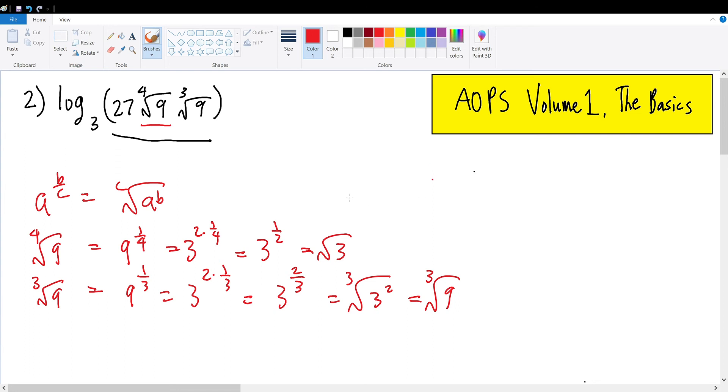Therefore, we can rewrite this logarithm as log base 3 of 3 to the 3rd power, because 27 equals 3 to the 3rd, times 3 to the 1/2, times 3 to the 2/3 power.